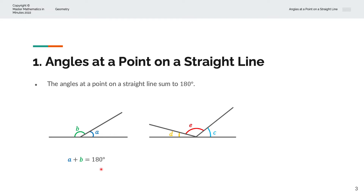We'll consider the case with three lines. We have angles c, d, and e. The sum of these angles, c plus d plus e, is equal to 180 degrees, because they lie on a straight line.